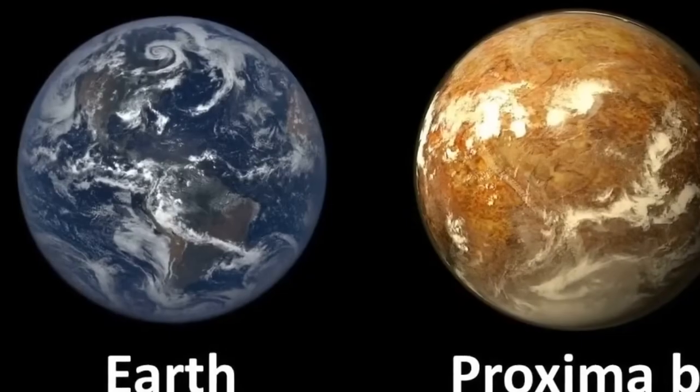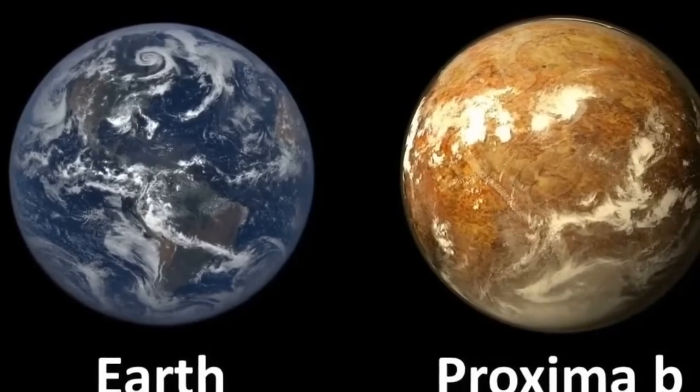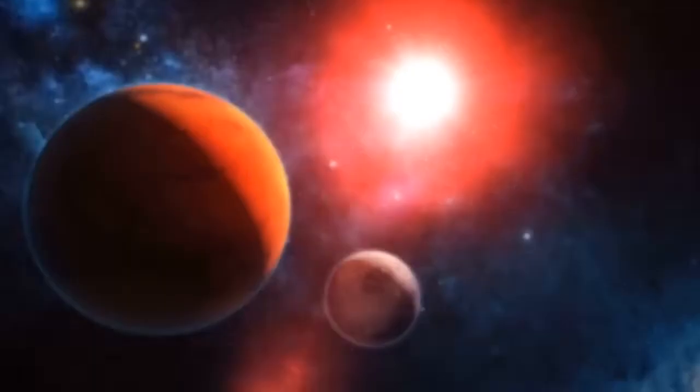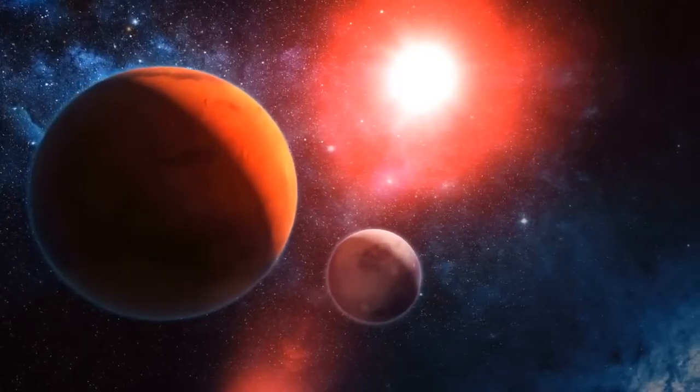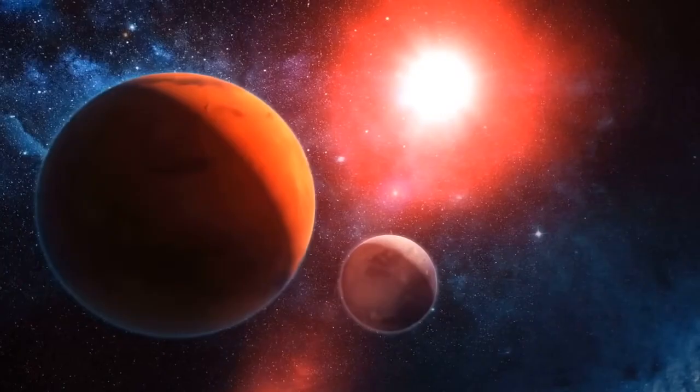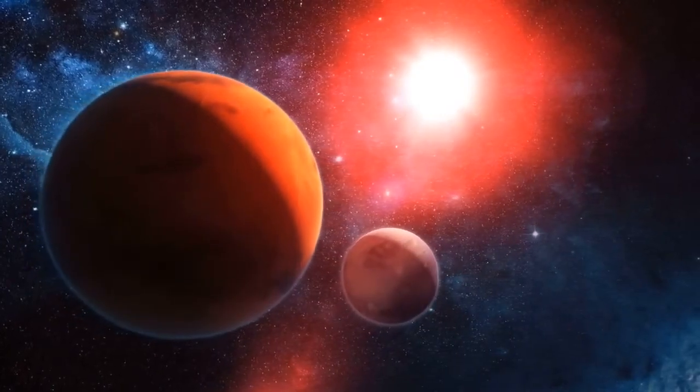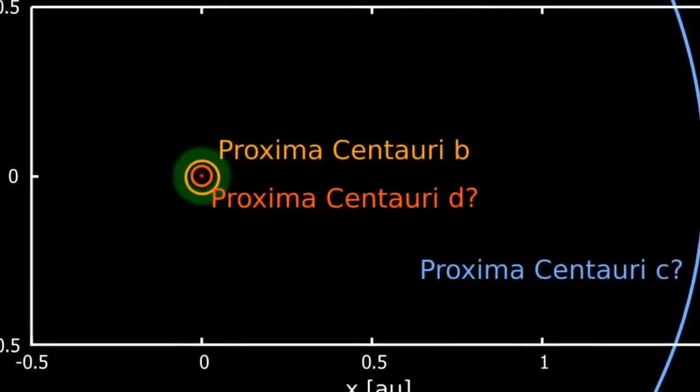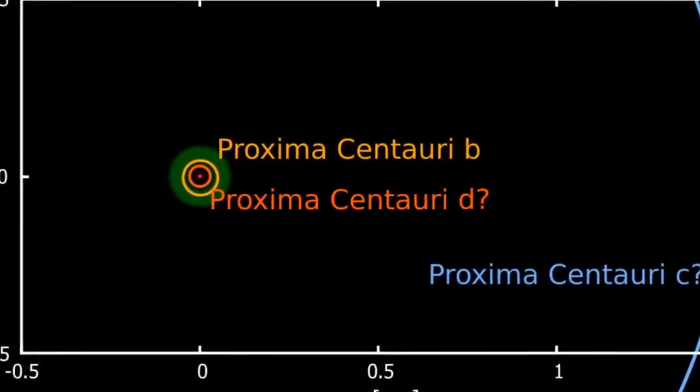Proxima Centauri b, being a super-Earth seven times heavier than our home, has a companion named Proxima Centauri c. The discovery of Proxima c in 2020, possibly adorned with a ring system, adds to the cosmic spectacle. Recent suspicions about another companion, Proxima Centauri d, linger in the astronomical community.